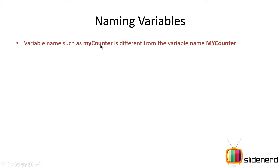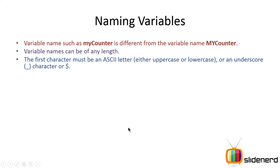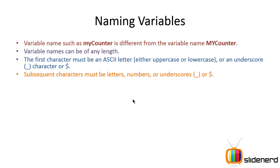Even a single character made capital or small changes everything in JavaScript because it's case sensitive. Variable names can be of any length. The first character must be an underscore or a dollar sign or some letter which is either uppercase A to Z or lowercase a to z. Numbers or anything else is not allowed to be the first letter. Subsequent characters may be anything which is letters, numbers, underscores and dollar sign. Special symbols include only two of them: underscore or dollar sign. Equals, plus, comma — nothing else is allowed.